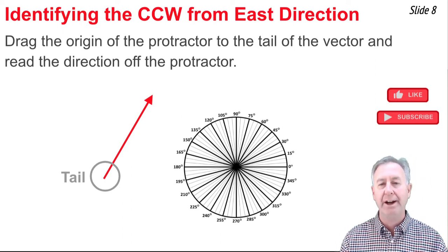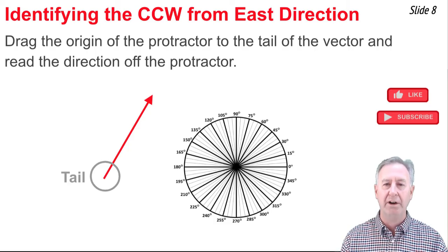A vector has a tail and an arrowhead, and you want to drag the protractor to the tail of the vector. It's the origin of the protractor that you want to drag there.